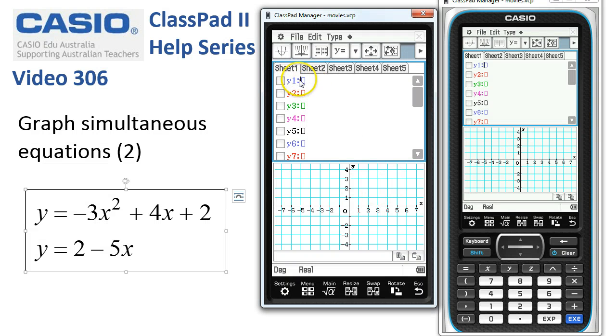Enter the two functions. So remember it's just the left-hand side. Here we go. The right-hand side. Sorry. Negative 3x to the power of 2 plus 4x plus 2.